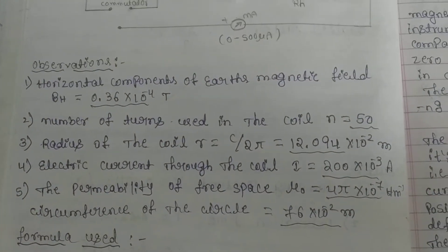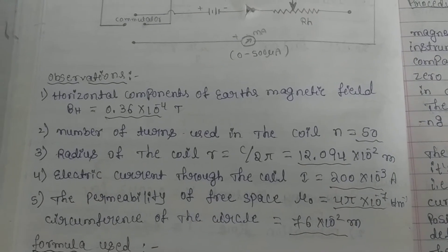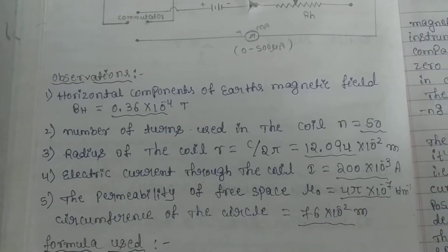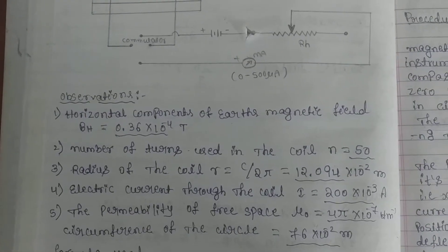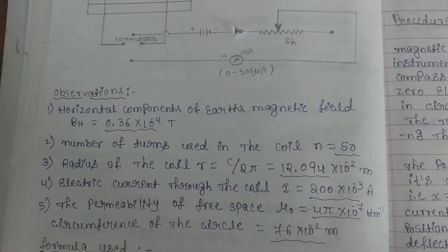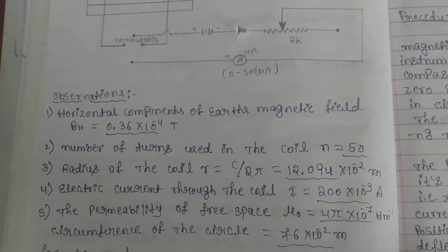Some observations we have to measure before the actual experiment: the horizontal component of the Earth's magnetic field is given, the number of turns used in the coil is n = 50, and the radius of the circular coil is measured using a thread. The electric current through the coil is kept constant at 200 milliamps, and the permeability of free space is also a constant.